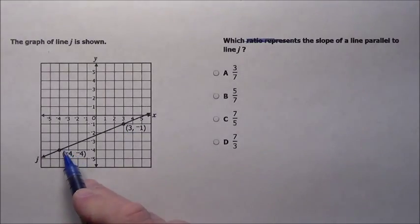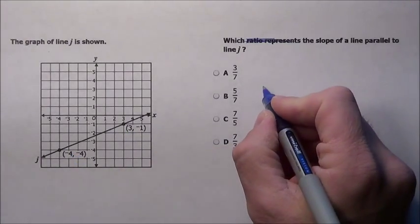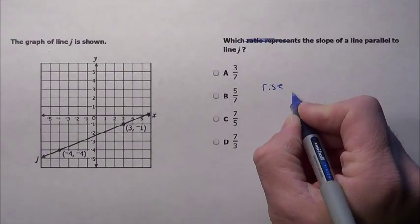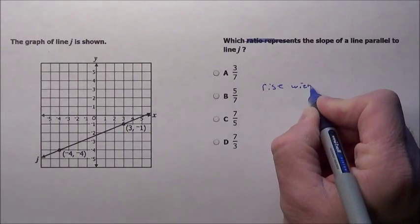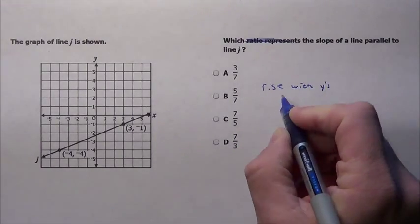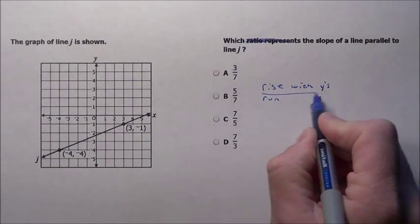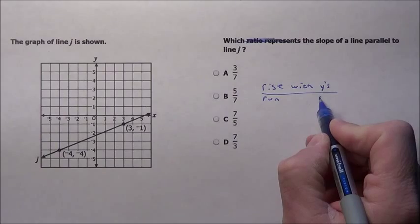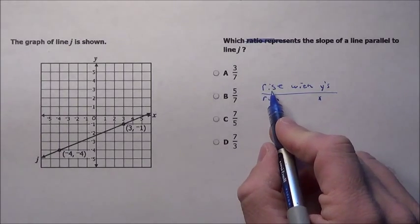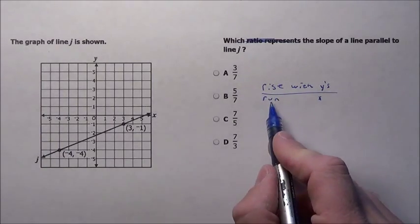So we want the slope of this. Well, the slope, if you remember, we rise with the y's and run to the x's. Remember, it's the change in my y's over my change in my x's. I could also do it, in this case, since it gives me a picture, rise over run, which let's do that.